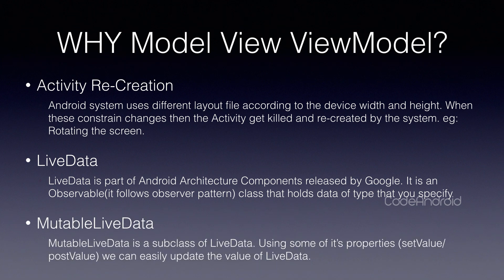MutableLiveData is a subclass of LiveData which allows you to modify the value. When we want to update the value of MutableLiveData from the main thread, we need to use the setValue method. If we want to update it from a background thread, we need to use the postValue method.